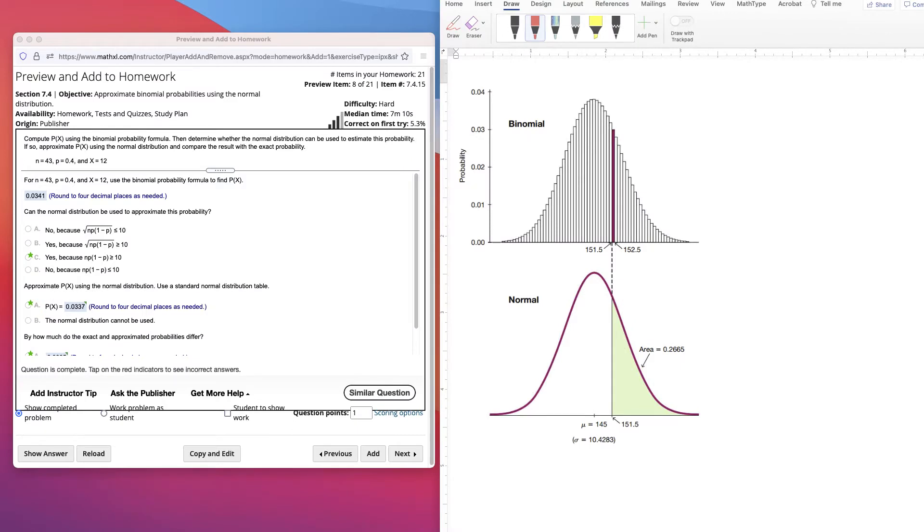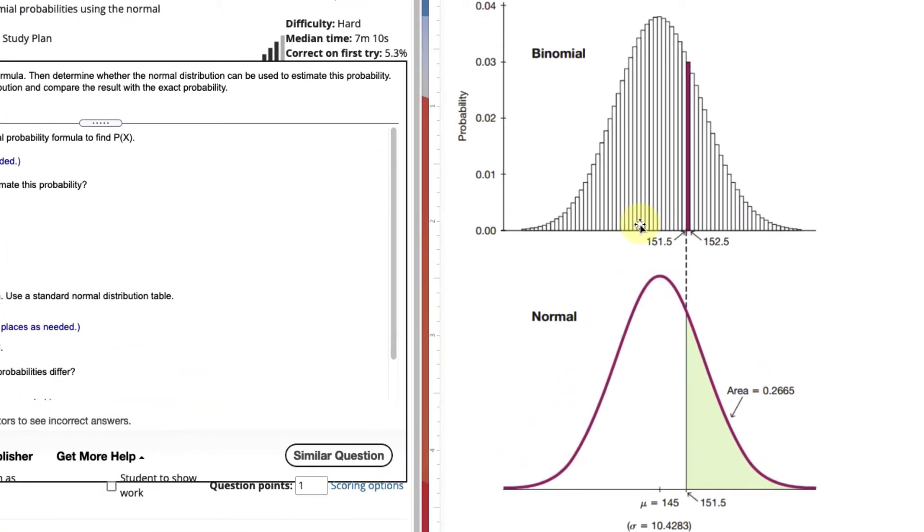In this video, we're going to use the normal as an approximation to a binomial. Remember, a binomial is a discrete probability distribution where you have distinct items one, two, three, and there's no other option to be in between them.